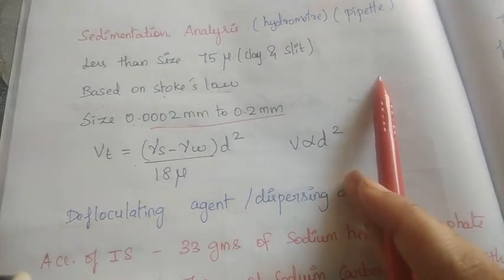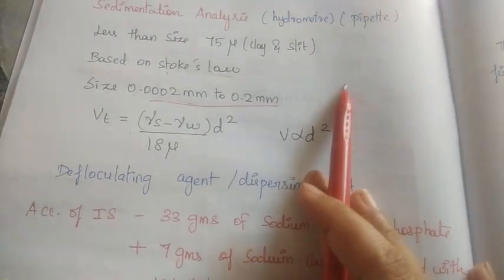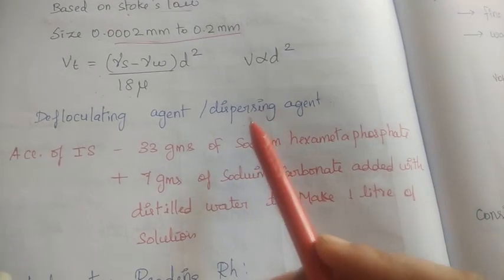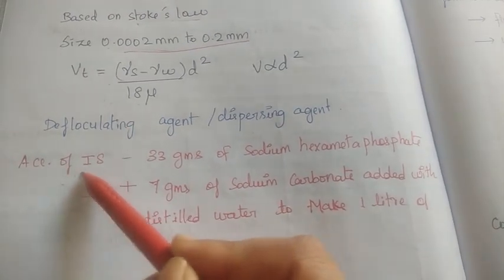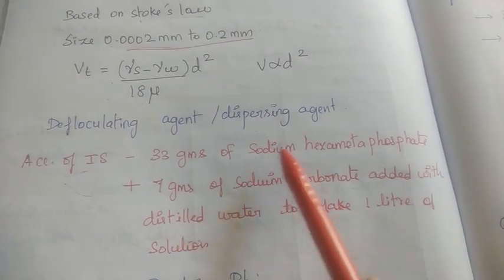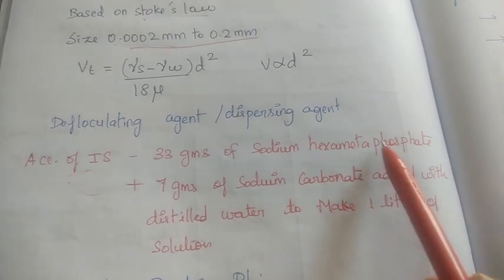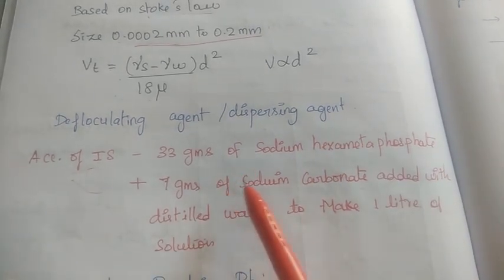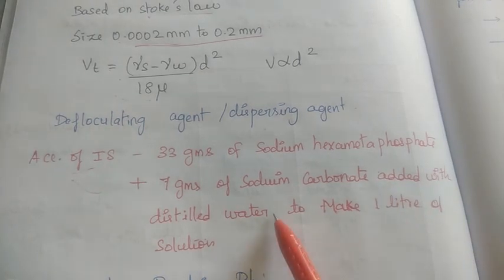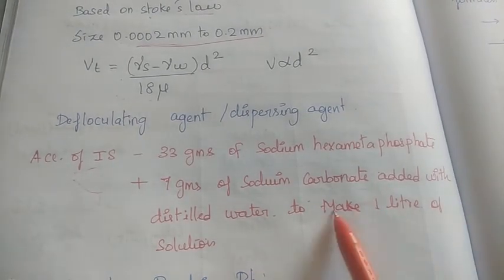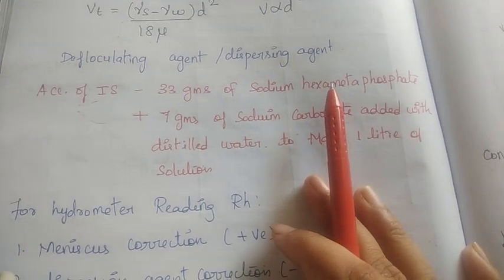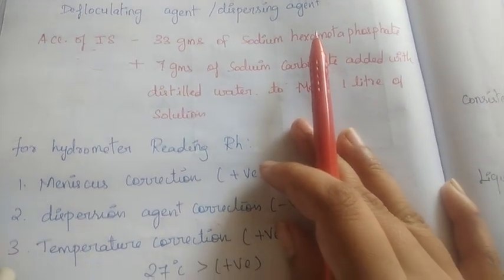When we do the sedimentation analysis, we will add a defloculating agent or dispersing agent. We will add 33 grams of sodium hexametaphosphate plus 7 grams of sodium carbonate, added with distilled water to make 1 liter of solution.